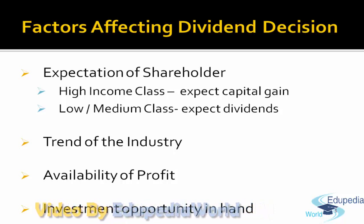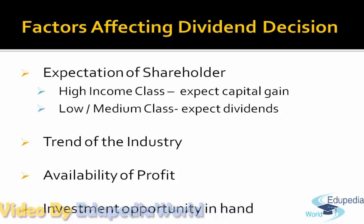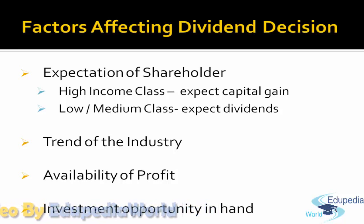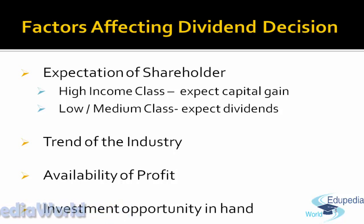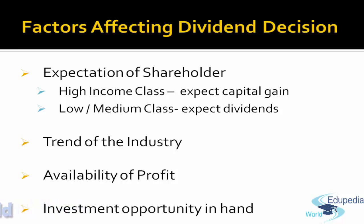Vice versa, a low or medium income class expects a regular income. Another factor is the trend of the industry. Shareholders generally compare the dividend paid by various companies in an industry. Though the company generally does not follow what the industry is doing, this is also one of the important factors that affects the company's decision.